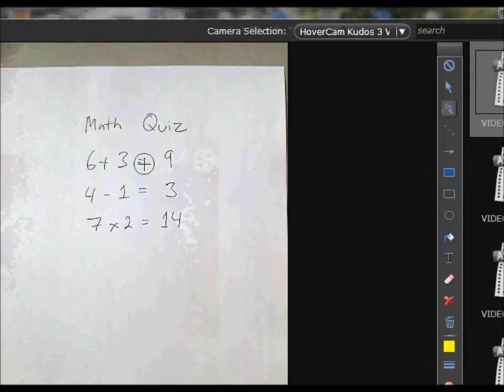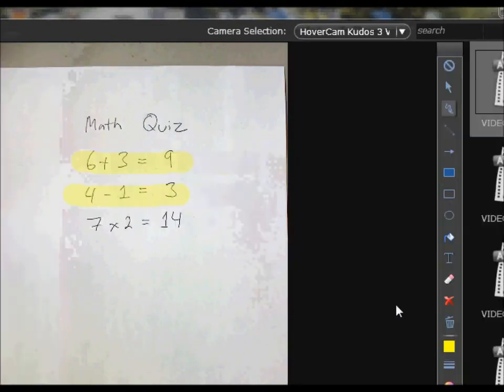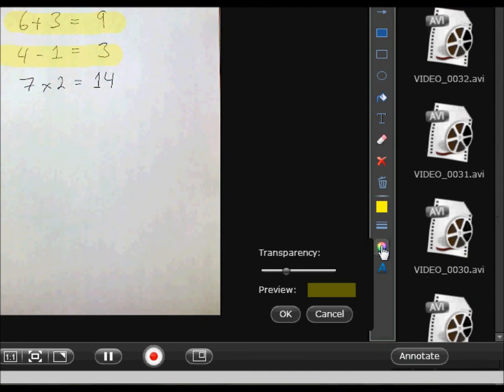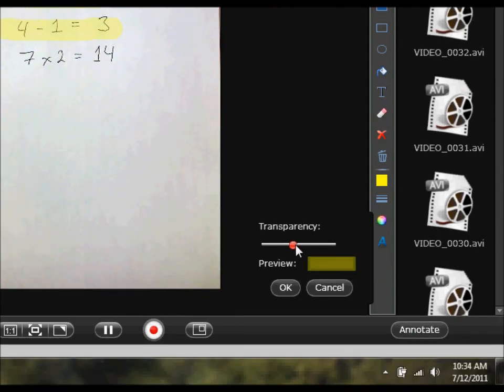And then when I use either the free hand or the straight line tool I can actually highlight text on my screen. And I kind of made my highlighting very transparent, maybe I should make it a little bit more opaque.